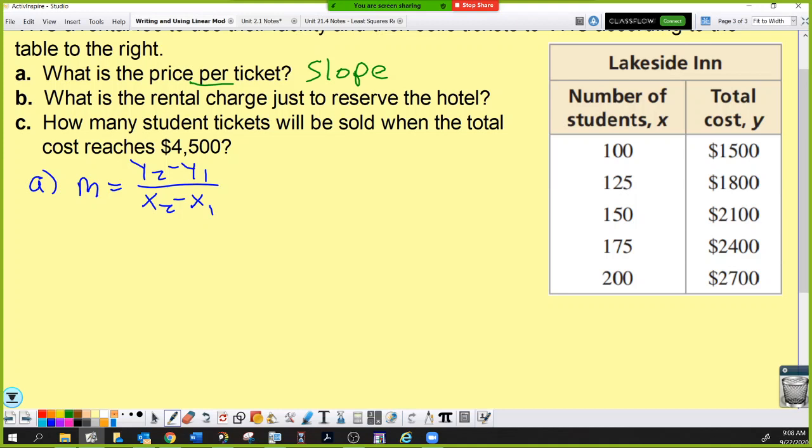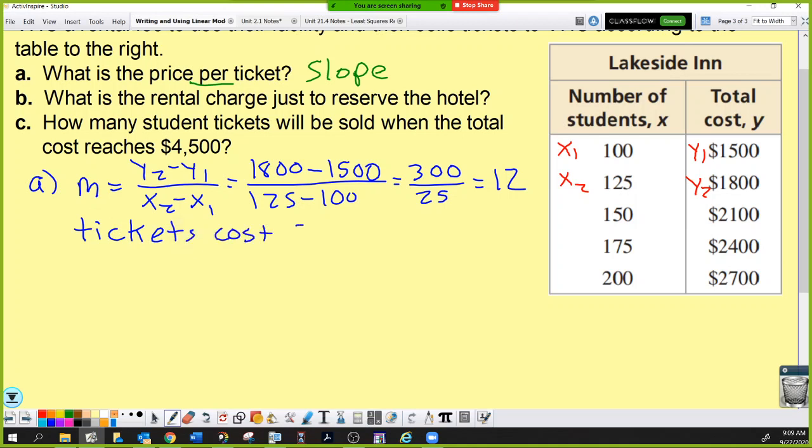Question A has asked you to find the slope. It doesn't matter which two points you choose, you will get the same answer. I'll take the first two. When we fill out our slope equation, we get y2, which is 1800, minus y1, which is 1500, divided by x2, 125, minus x1, 100. That is 300 over 25. I want to know how much is one ticket, which means you need to divide. 300 divided by 25 is 12. Tickets cost $12 each.